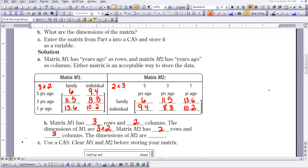Three rows, two columns. In matrix 2, it has two rows and three columns, one, two, three, so the dimensions of that matrix are two by three.